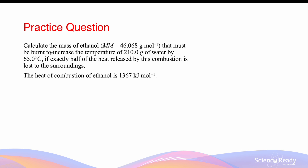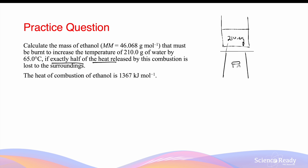Calculate the mass of ethanol that must be burnt to increase the temperature of 210 grams of water by 65 degrees Celsius, if exactly half of the heat released by the combustion is lost to the surrounding. The heat of combustion of ethanol is 1367 kilojoules per mole. To start the question, let's draw a rough diagram to understand the transfer of energy in this experiment. We have a tripod elevating a beaker of water that is 210 grams, and beneath the tripod we have a spirit burner that contains ethanol. When the ethanol enters combustion, it will release some amount of energy, part of which goes towards the water which is absorbed, and the other half will go towards the surrounding. So 50% of the energy is lost, while the other 50% is being absorbed by the water.